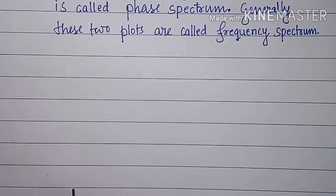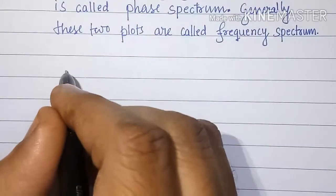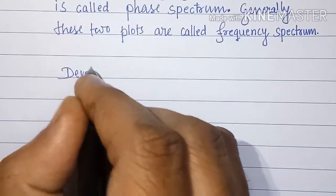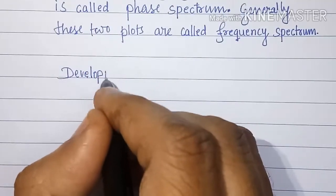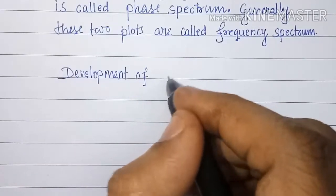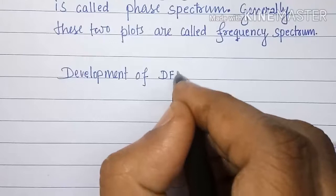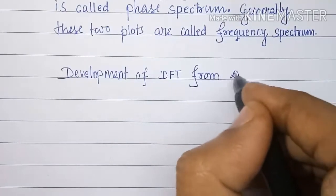Now we will see how exactly we obtain X(k) from X(e^jω). Development of DFT from DTFT.